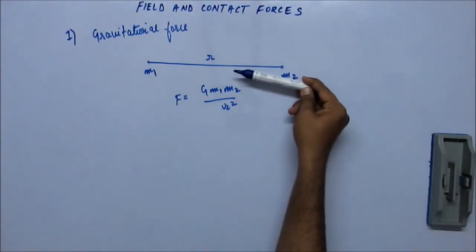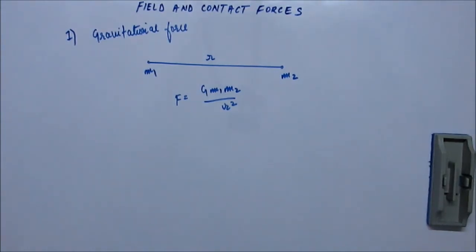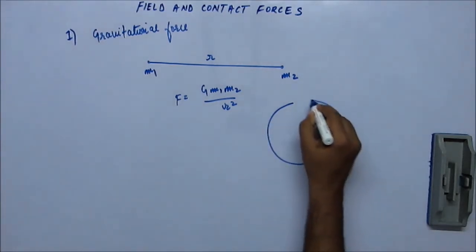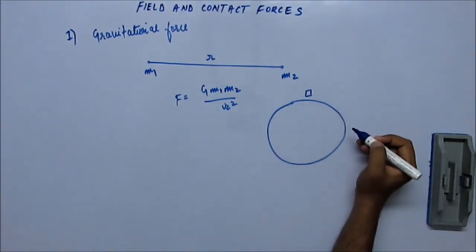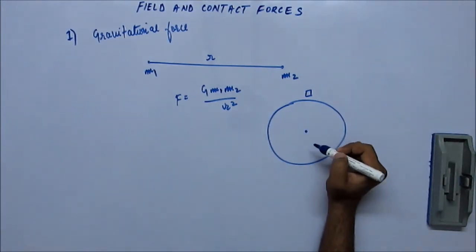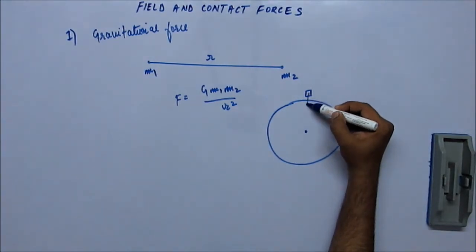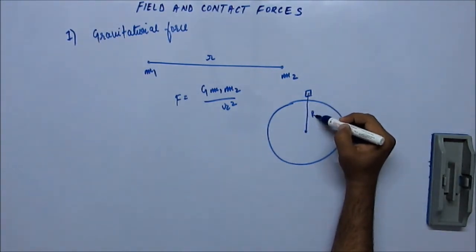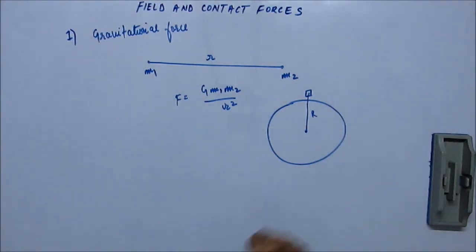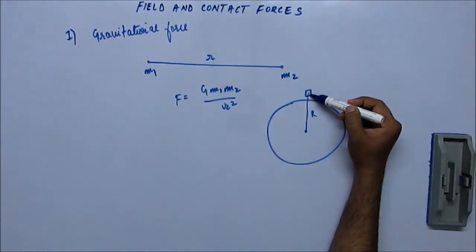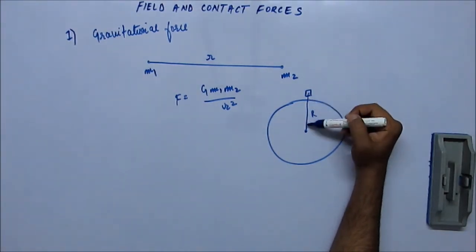Now, the same gravitational force also acts between the Earth and any body near to it. In that case, the distance between the center of the Earth and the center of the body will be very close to the radius of the Earth. The radius of the Earth is 6400 kilometers, and the distance between the surface and the body would be actually very less, much less than one kilometer in most cases.